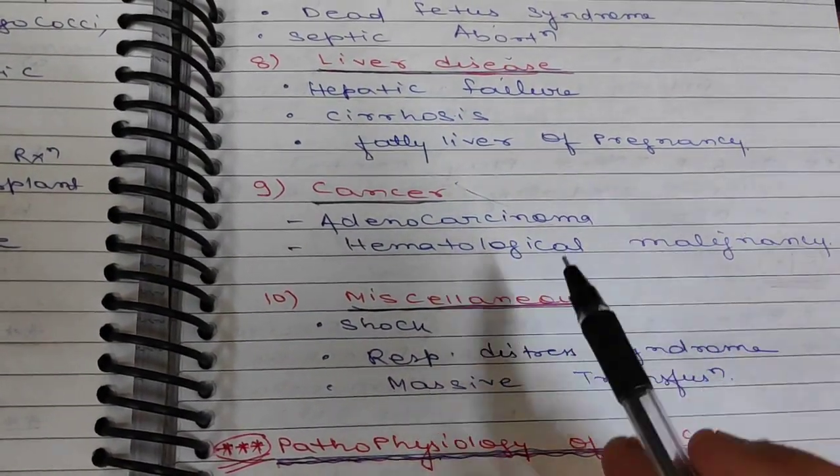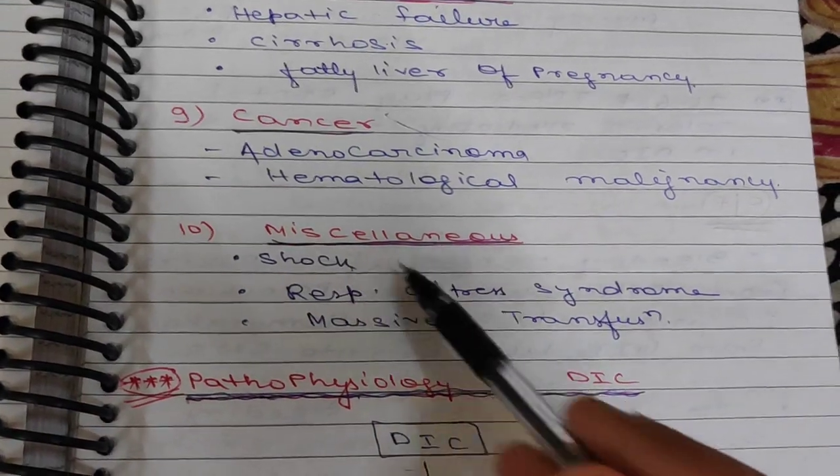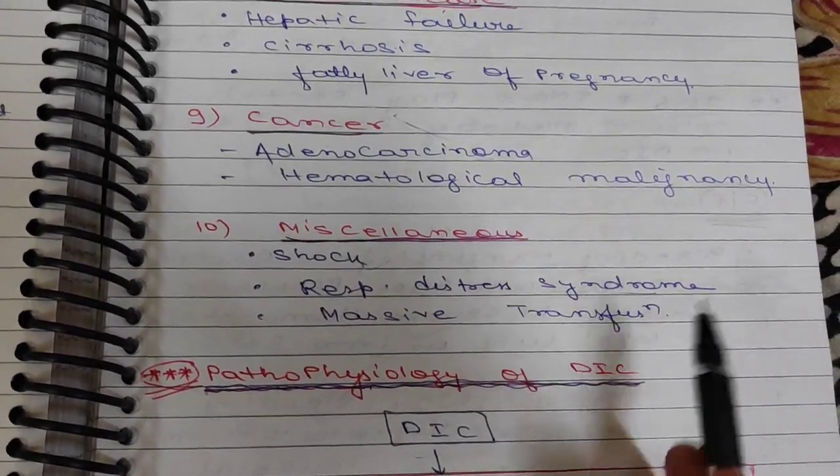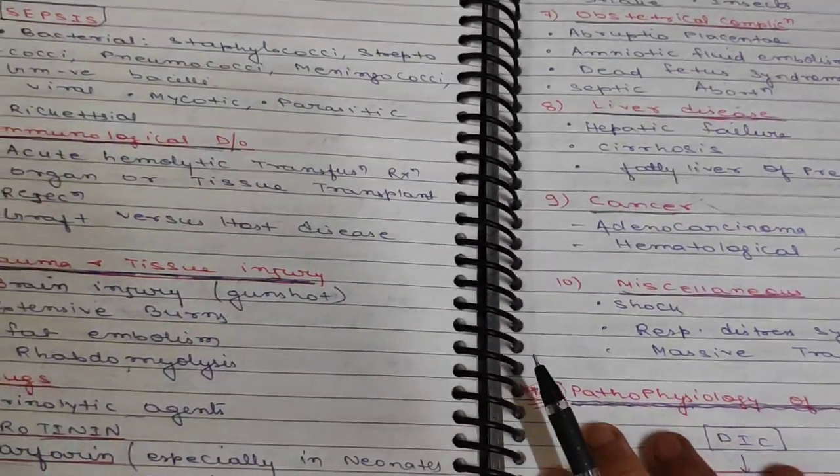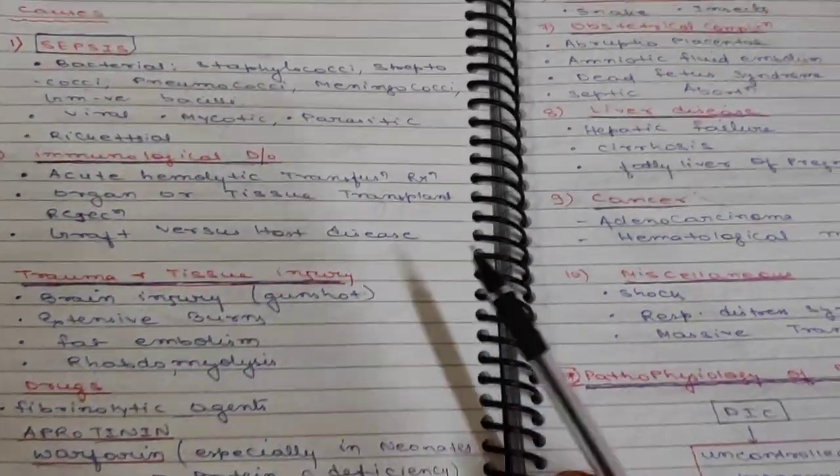Cancer can also lead to DIC, including adenocarcinoma and hematological malignancy. Miscellaneous causes include shock, respiratory distress syndrome, and massive transfusion. These are the overall causes behind DIC: sepsis, immunological disorders, trauma, drugs, envenomation, obstetrical complications, liver disease, cancer, and miscellaneous.